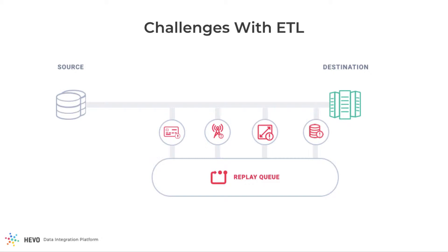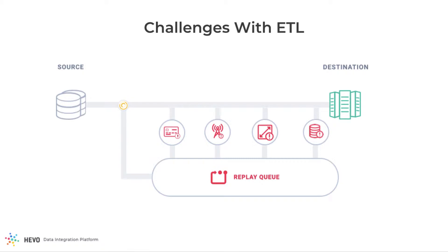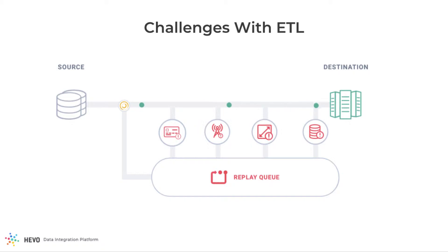Any exception in the data pipeline is caught and parked in a separate staging area called the Replay Queue. You're notified so that you can review the errors and make any required changes. You can then selectively process those events which have the exceptions. Meanwhile, your pipelines continue to process the incoming records which don't have exceptions.